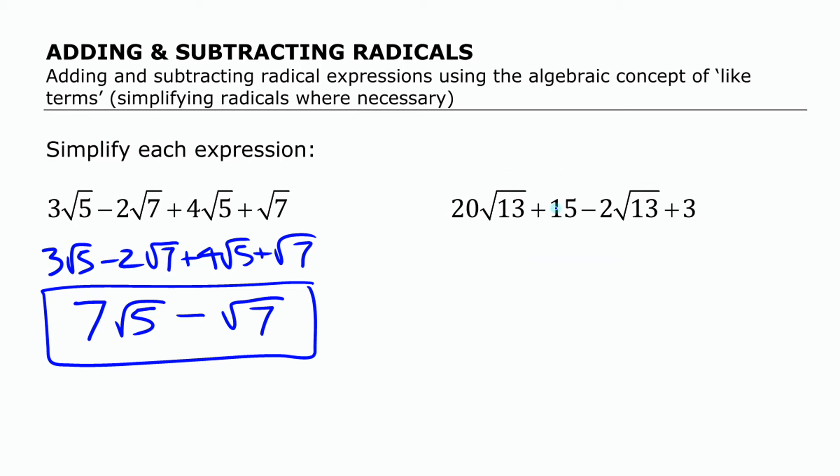The second one here is very similar in that there's four terms, but two of the terms here are whole numbers, non-radical terms. We have two like radicals: 20 root 13 minus 2 root 13. We can combine that together and make 18 root 13. Then just like you would have done in the past, if you have plus 15 and plus 3, we can combine those together to make 18.